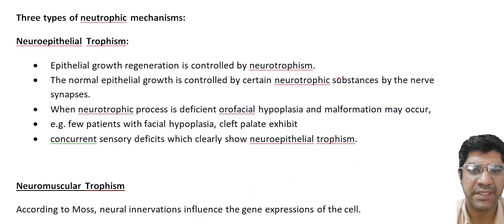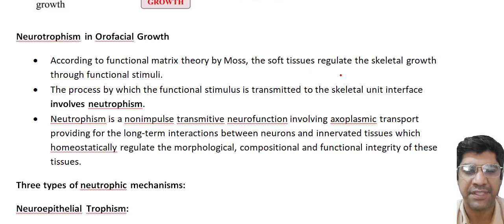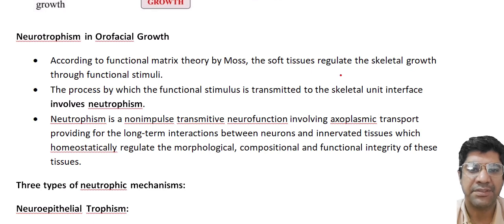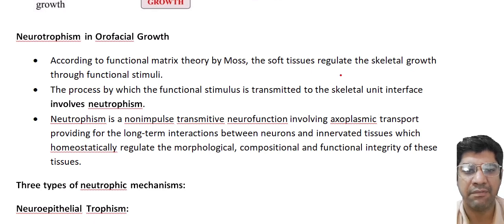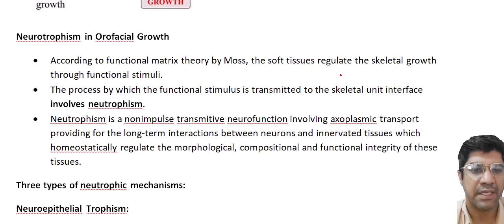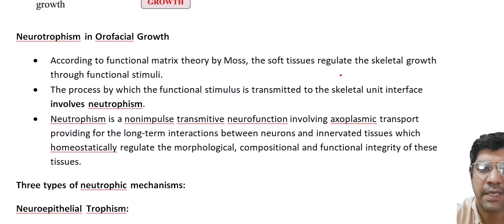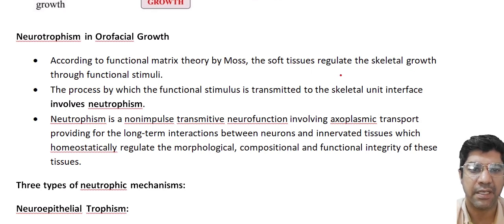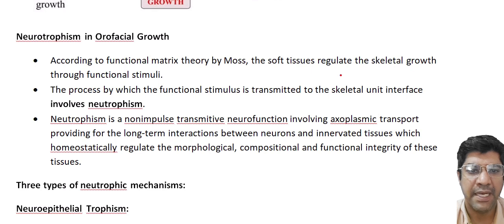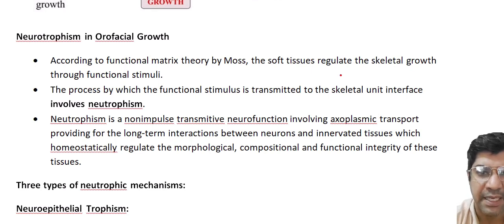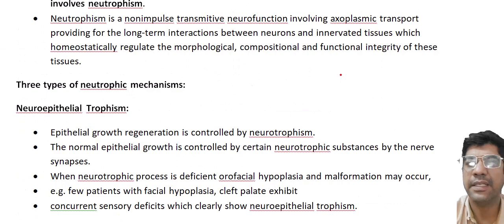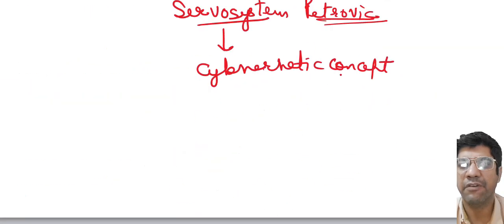Neurotropism is a concept related to interaction between nerves and tissue. It is a non-impulse transmitting neural function that involves the transport of materials within nerve cells. Neurotropism facilitates long-term interactions between neurons and the tissues they innervate. Three types of neurotrophic mechanisms can be seen: neuroepithelial trophism — which relates to the growth and regeneration of epithelial tissue — and neuromuscular trophism.